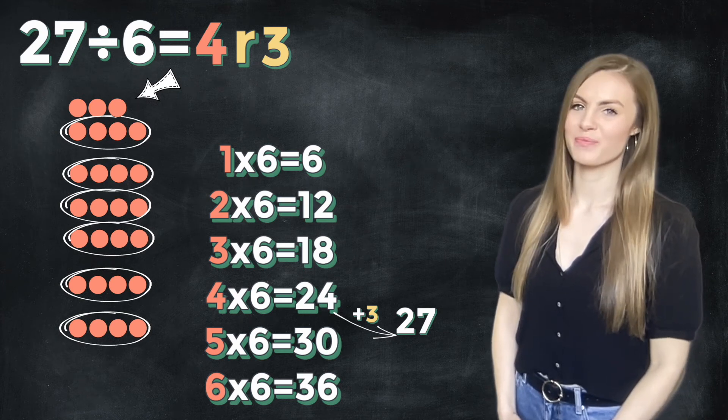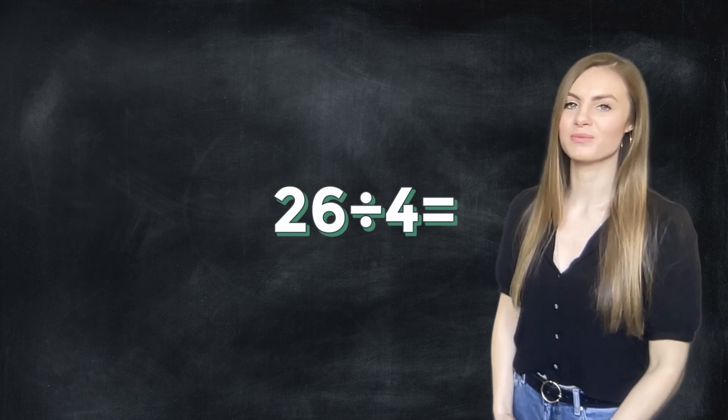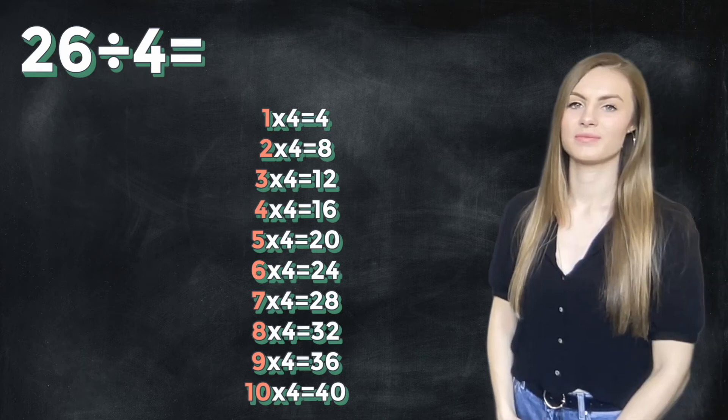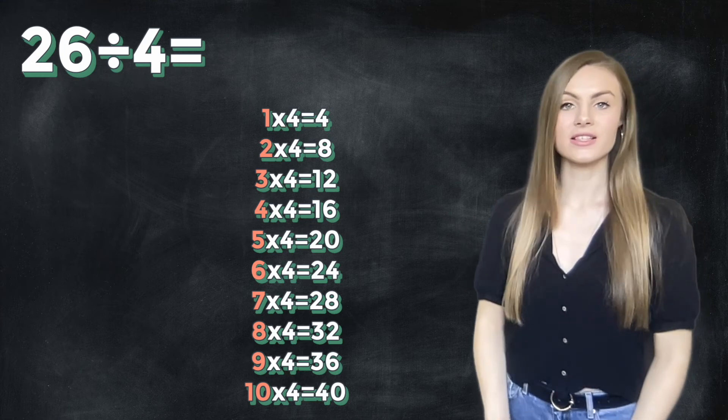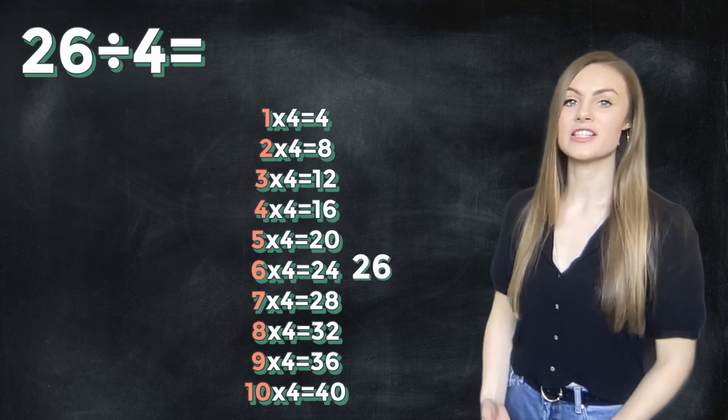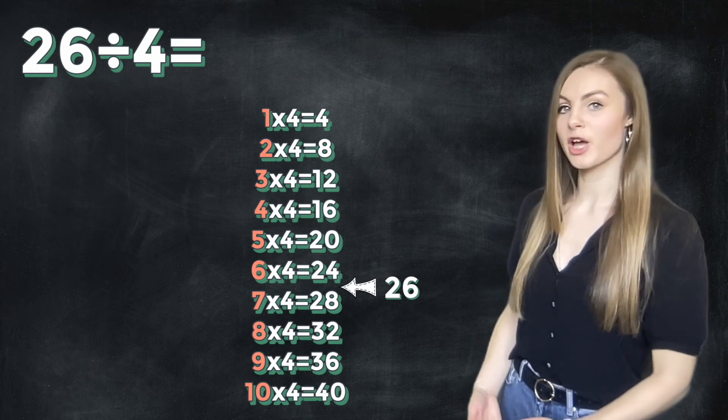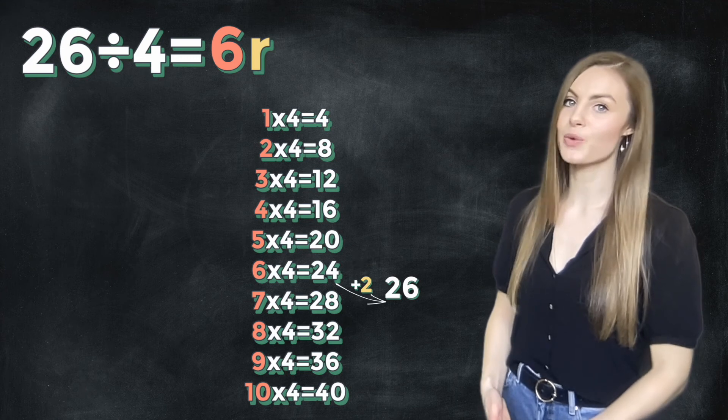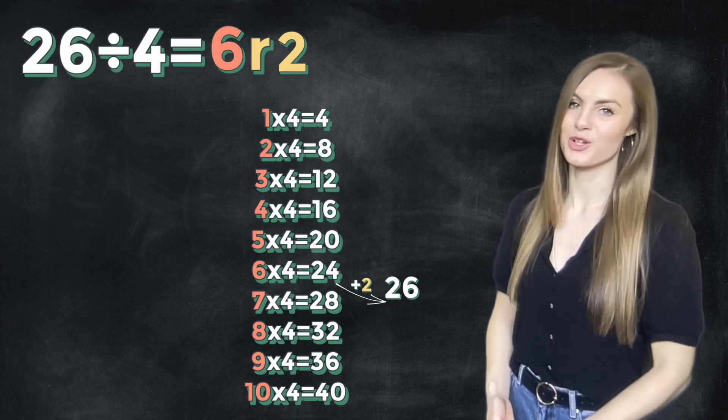Your turn to have a go at home. Have a go at 26 divided by 4. Pause the video now. Welcome back. If I write out my 4 times table I can see that 26 fits nicely between 24 and 28. I look at the multiple below which gives us 6. I then count on from 24 to 26 which gives us the remainder of 2. So my answer is 6 remainder 2.